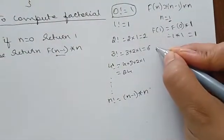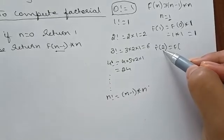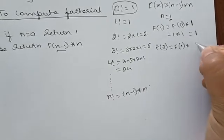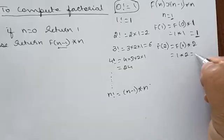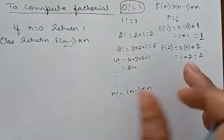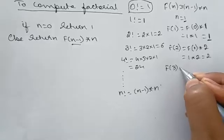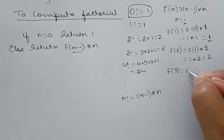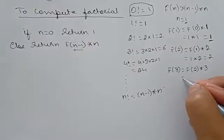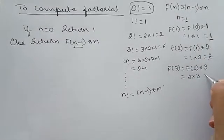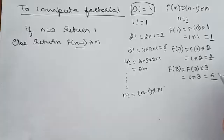For f(2): f(n-1) × n = f(1) × 2. We just calculated f(1) = 1, so 1 × 2 = 2. Therefore f(2) = 2, confirming 2 factorial = 2. For f(3): f(2) × 3 = 2 × 3 = 6. So 3 factorial equals 6.